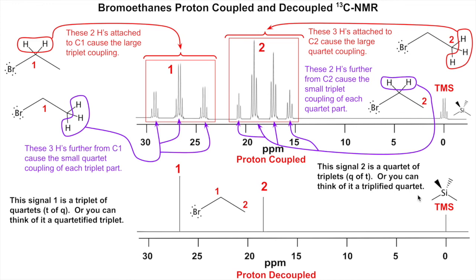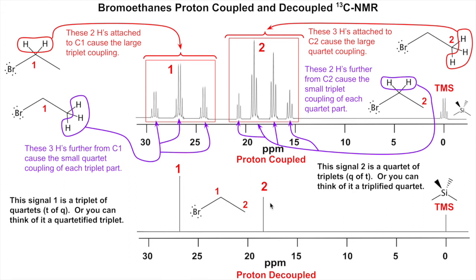If you allow protons to couple your carbons during carbon-13 NMR, you get a lot of signals. With just two carbons it's already complex — with more carbons the signals overlap and it becomes very hard to read. So we almost always use the proton-decoupled carbon NMR spectrum: one carbon, one signal. Carbon-13 NMR is in a way simpler than hydrogen NMR because we decouple it, though if we didn't, it would be far more complex.